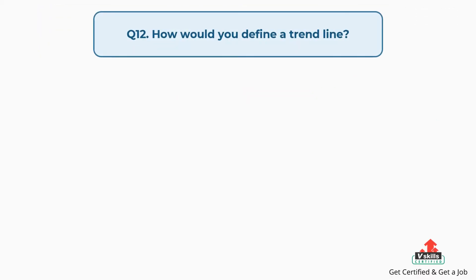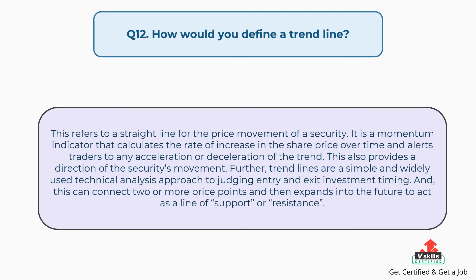Question number 12: How would you define a trend line? This refers to a straight line for the price movement of a security. It is a momentum indicator that calculates the rate of increase in the share price over time and alerts traders to any acceleration or deceleration of the trend. This also provides a direction of the security's movement. Furthermore, trend lines are a simple and widely used technical analysis approach to judging entry and exit investment timing, and can connect two or more price points and then expand into the future to act as a line of support or resistance.